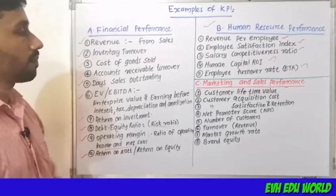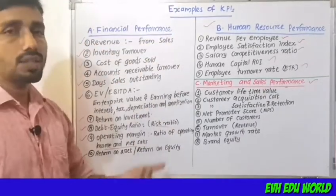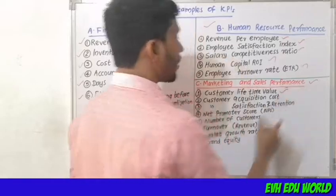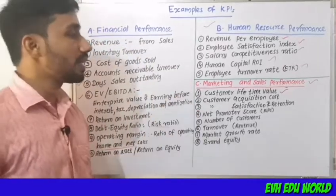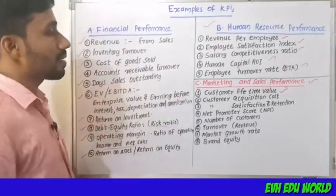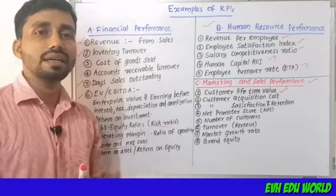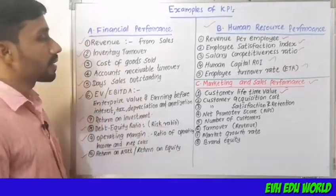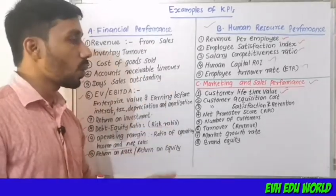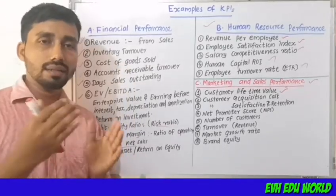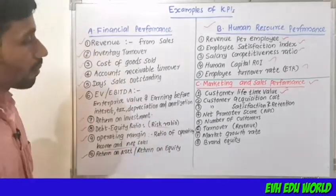The next part is Marketing and Sales Performance. Indicators include Customer Lifetime Value, Customer Acquisition Cost, Customer Satisfaction and Retention, Net Promoter Score, and Number of Customers.